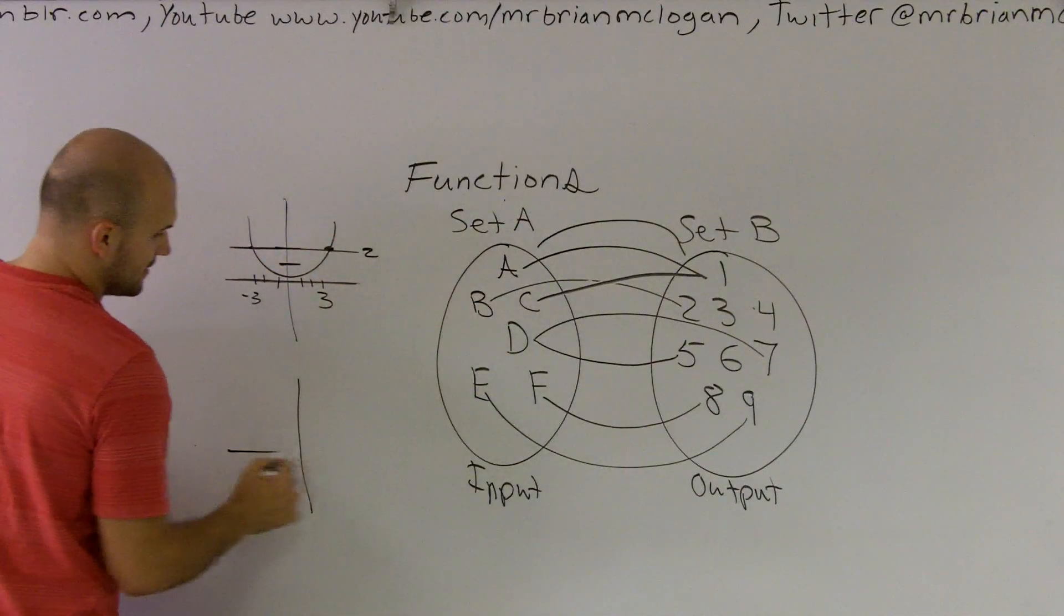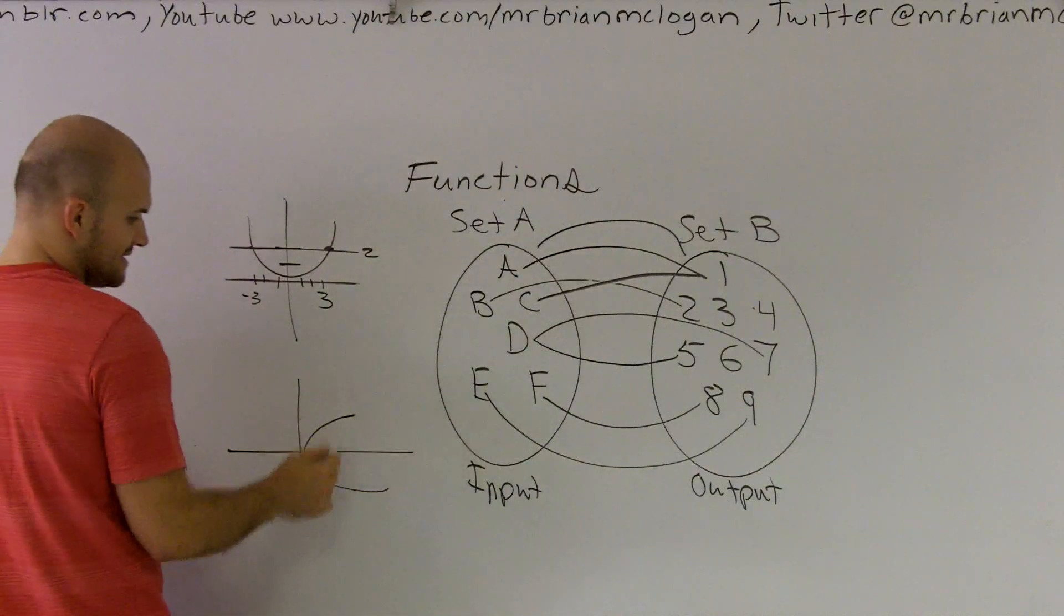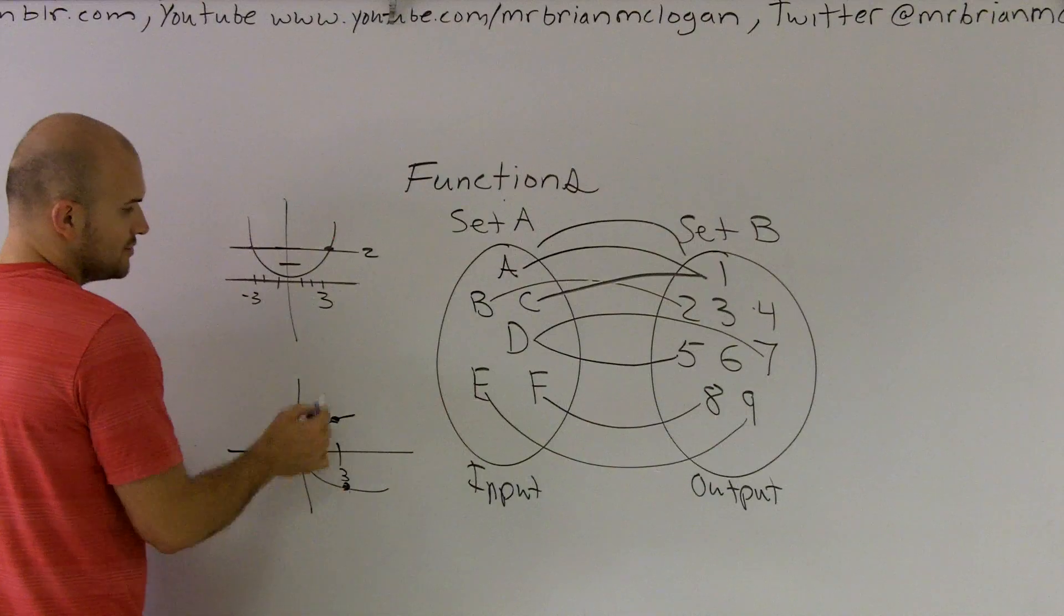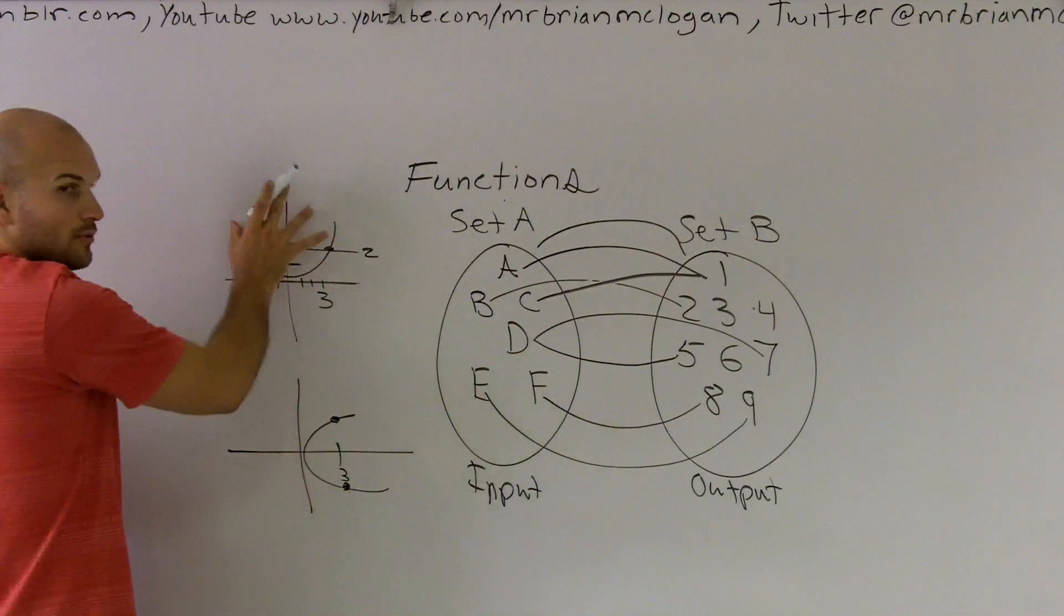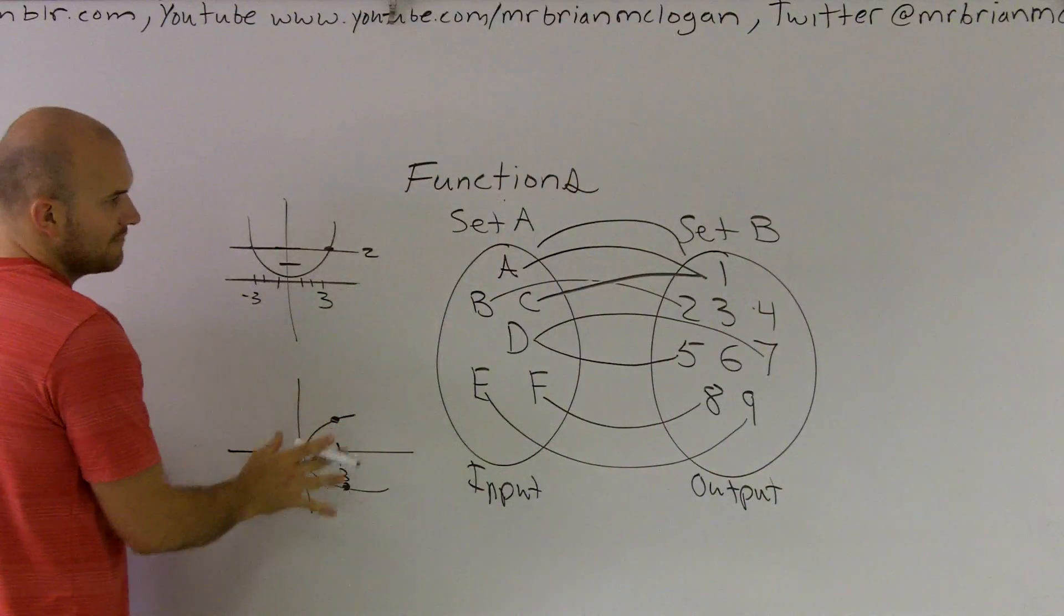This could be represented as y squared, where D is at 3 and it's crossing as two different output variables. So this would be a function and this would not be a function.